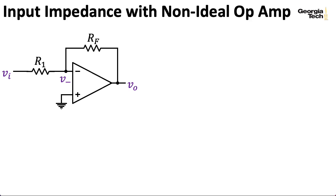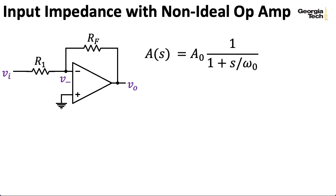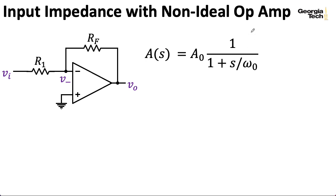A more realistic op amp model would presume that the gain is both frequency-dependent and not infinite. As in the previous couple of lectures, we're going to assume that we can use a first-order low-pass model for the frequency response. So I'm letting capital A represent our frequency response in the Laplace domain. If you plug j omega in for s, you get the frequency response. This is the way Marshall Leach usually writes it in his notes. I often like to multiply the numerator and the denominator by omega naught to write it in another form, but you can use whatever form you like.